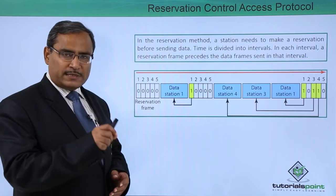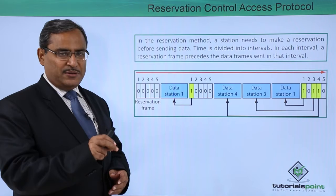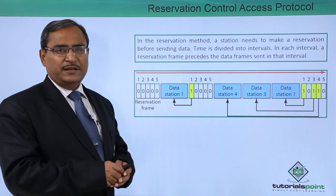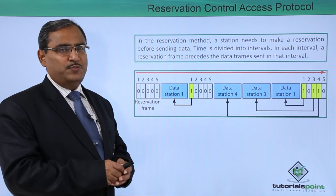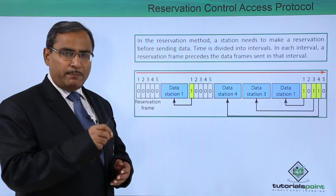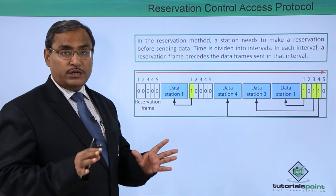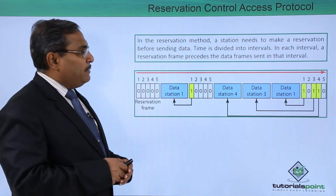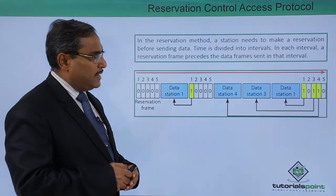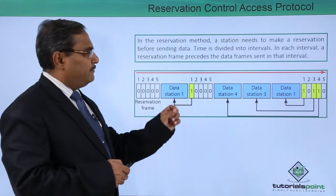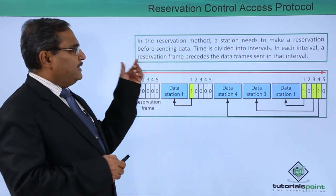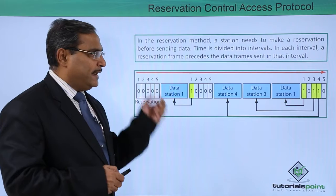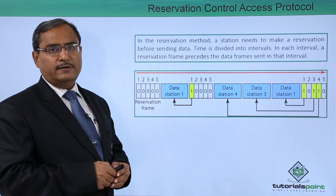That means, if we can book our seats on a train journey, then obviously our seat will be occupied by myself only — there will be no collision. The time is divided into intervals. In each interval, a reservation frame precedes the data frame sent in that interval.